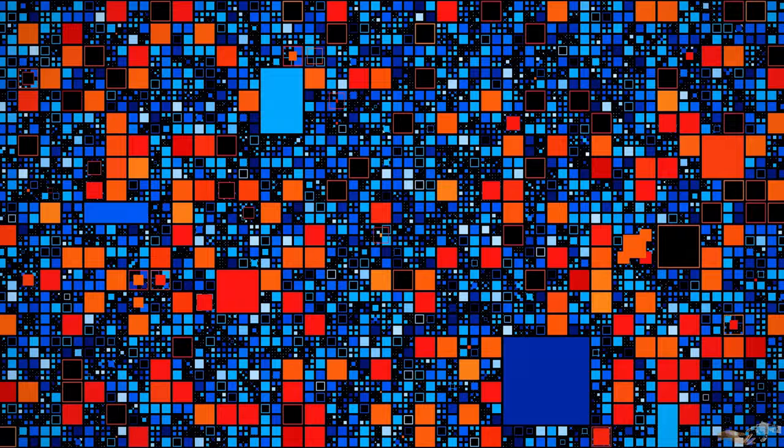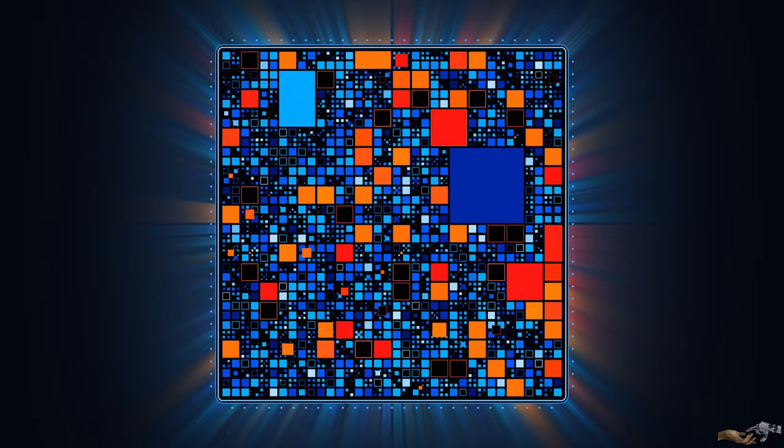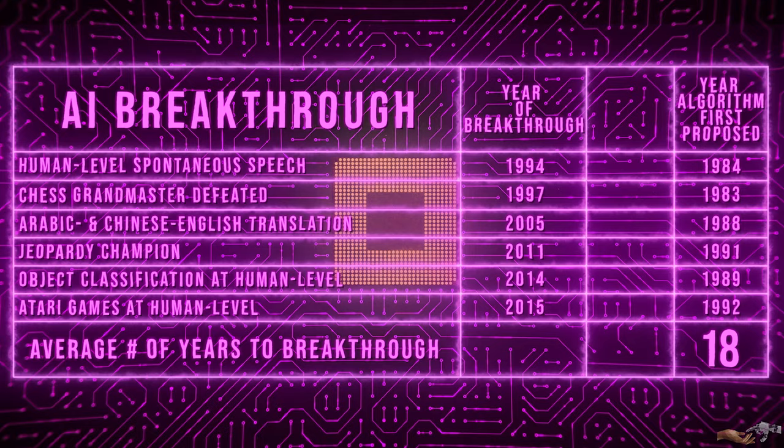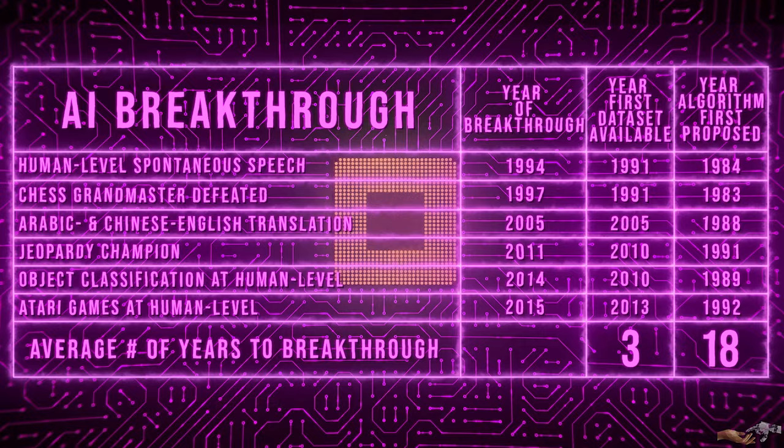Now one can say that finding structure in data is a human condition. It's how we've come so far, and these advances gave computers what they required to do so as well. Now as you can see here, the difference between various AI breakthroughs and the date the algorithms were initially proposed is nearly two decades. However, on average, just three years after the dataset for a said problem becomes available does the breakthrough happen, meaning that data was a huge bottleneck in the advancement of the field of AI.